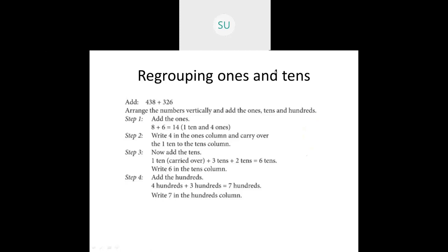So what we do in regrouping 1s and 10s: first, the numbers that are given to us, we arrange those numbers vertically in columns and then we first add the 1s. So we start adding the number from 1s. Then once we get our answer from 1s — for example, 8 plus 6 we got as 14 — so 14 1s, because the number is a two-digit number and it is also greater than 9. What we'll do is we'll regroup 14 1s as 1 ten and 4 ones, and carry over the 1 ten to the 10s place. So now we add the 10s. We add the carried over 1: 3 plus 2 plus 1 which is 6. So we got 6 tens here, so we'll write 6 in the 10s column.